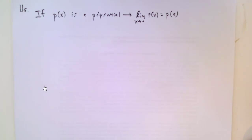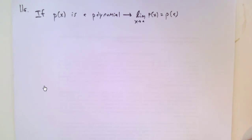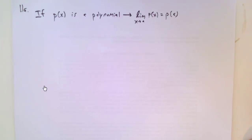The first part asks: are these statements always true, sometimes true, or never true? If P of X is a polynomial, then it must be true that the limit as X approaches A of P of X equals P of A.